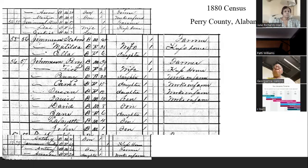Another thing about the FAN club: if you notice on this page, in households 55 and 56, you'll see a Seaborn Jemison with his wife Matilda and Ella. We'll talk about him in a minute, but he plays a major part in this whole thing.